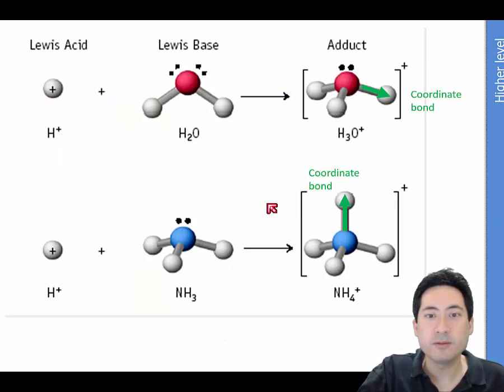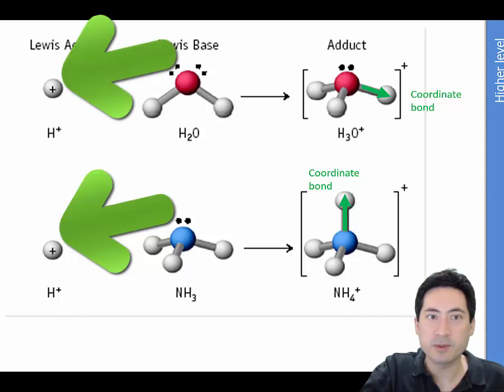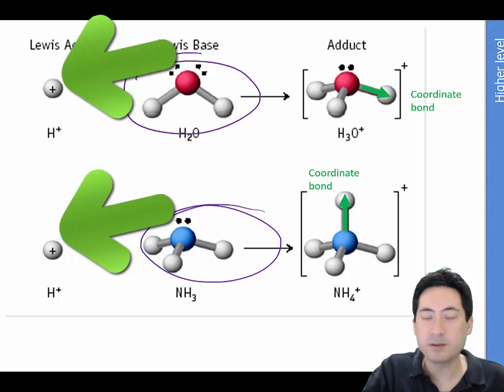This picture here is just showing you where the dative coordinate bond is. You can see it forms over here. And as the previous example, it forms over here. So in both cases, this here is the Lewis base here and here. Make sure you always draw the square boxes if you're drawing your Lewis diagram and it's got a charge on it too.